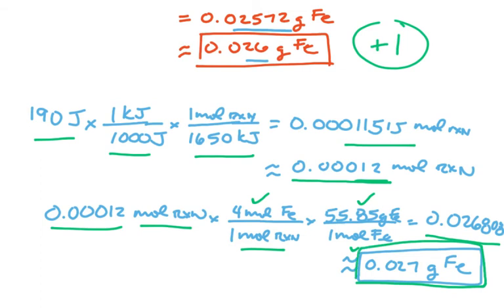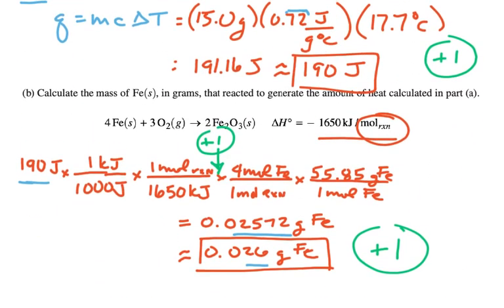With this approach, you earn one point for the moles of reaction and one point for 0.027 grams. Both 0.026 and 0.027 get full credit depending on whether you rounded intermediate steps. You don't have to show separate steps, but doing so helps earn partial credit. This is a two-point portion.